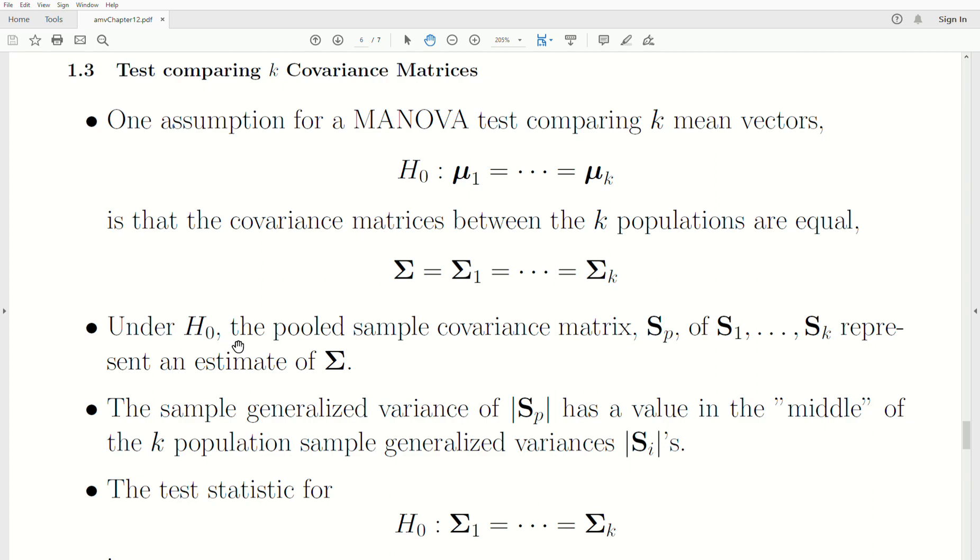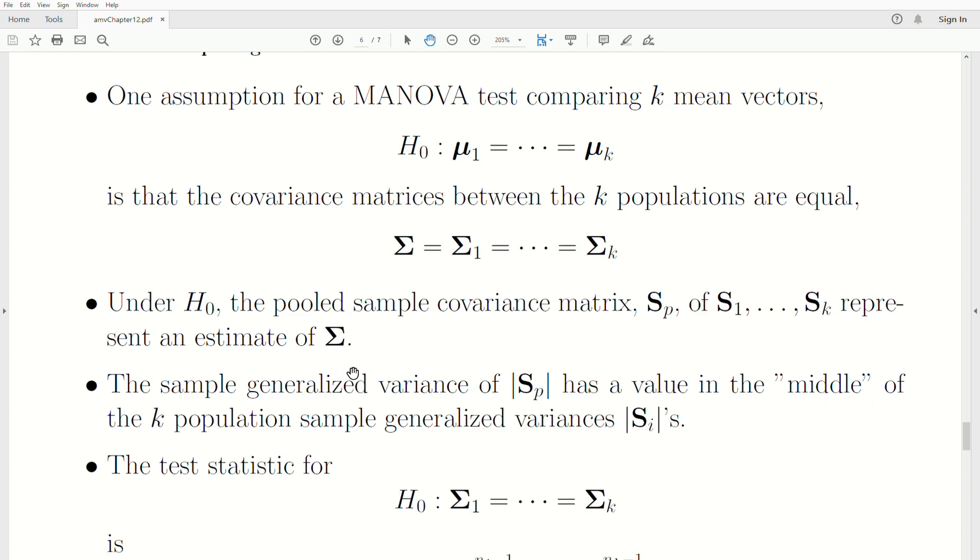And so under H0, the pooled sample covariance matrix Sp of S1 through SK represents an estimate of this common covariance matrix sigma. The test looks at the sample generalized variance of the pooled estimate. Mathematically, it has to be a value in the middle of the K population sample generalized variances. That's just the way it's defined.